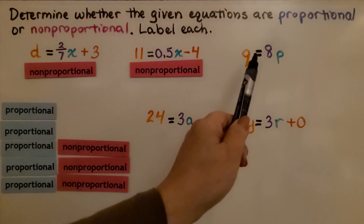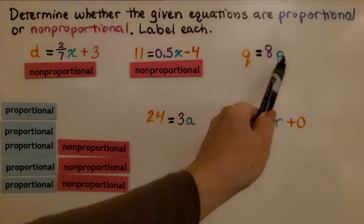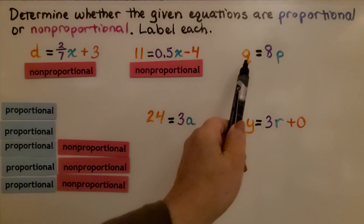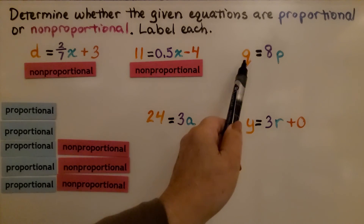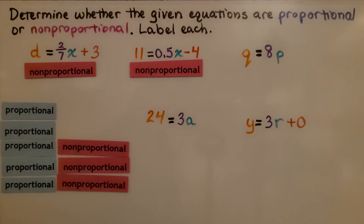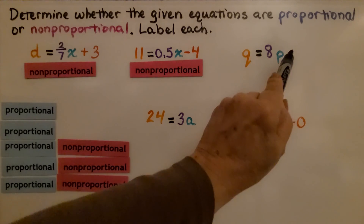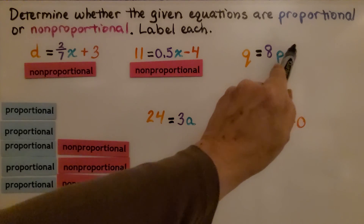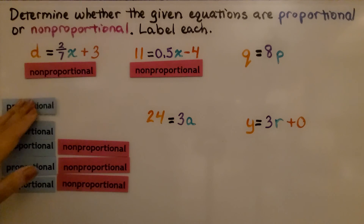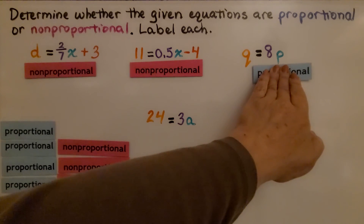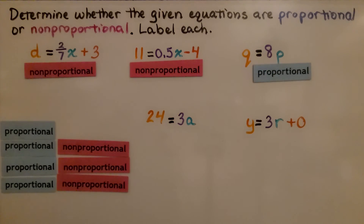Now look at this one. We've only got two terms on each side of the equation, but we have two variables. We could write plus zero here. This is a proportional relationship — a proportional equation.